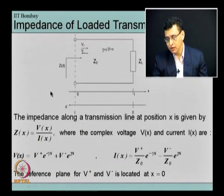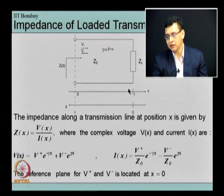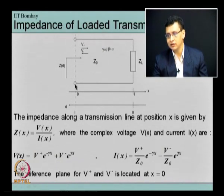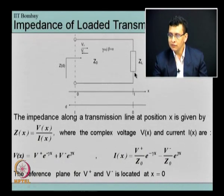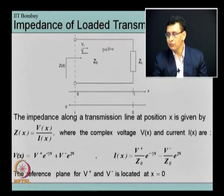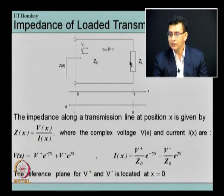If we are calculating from the source reference plane then x represents the distance from the source. The challenge is: what is the absolute quantity at the source that we know? If we take a transmission line with a load Z_L connected to one end and call the other end the source end, we really do not have any reference in the absence of a source. On the other hand, the load connected at one end is a standard reference because the value of Z_L remains constant and does not change even if we have different kinds of sources at the source end.